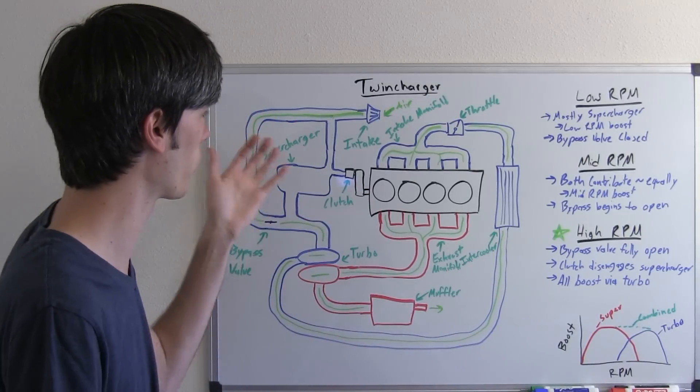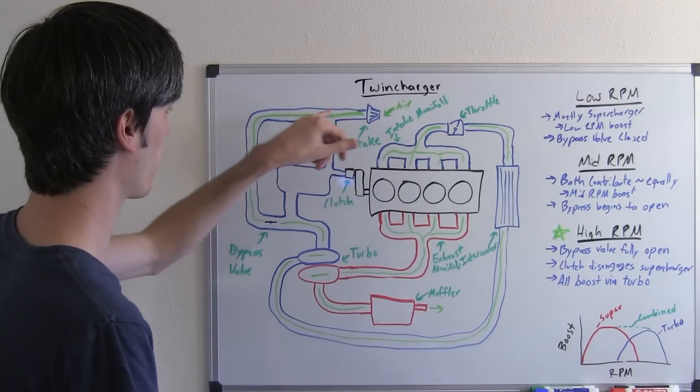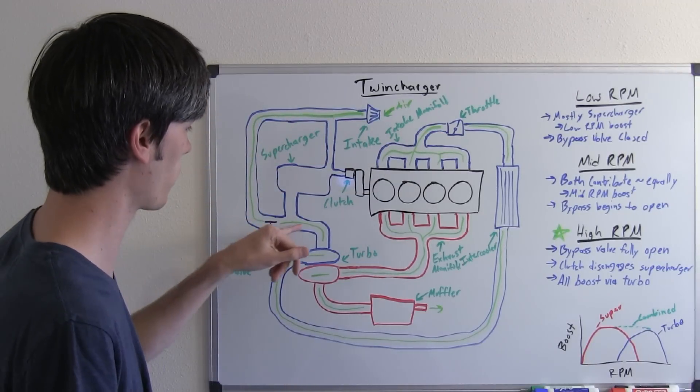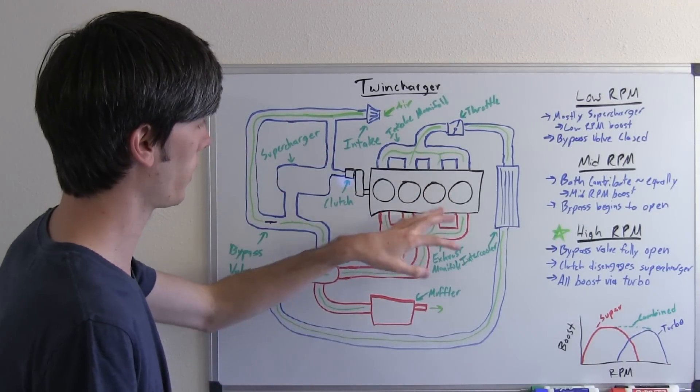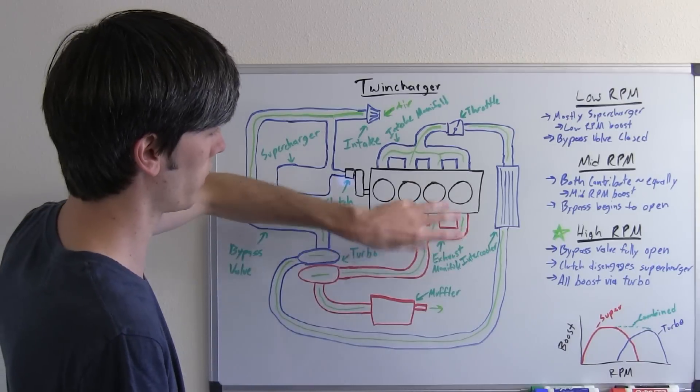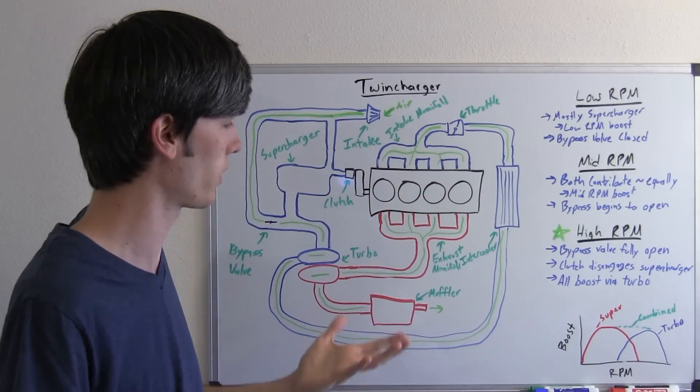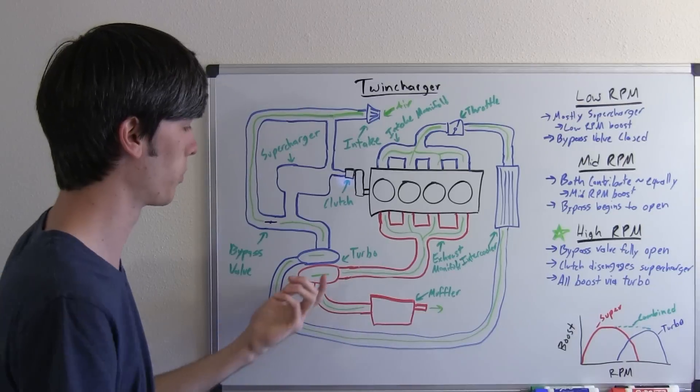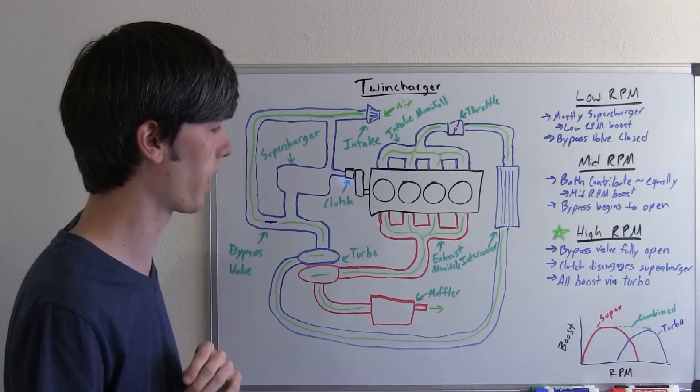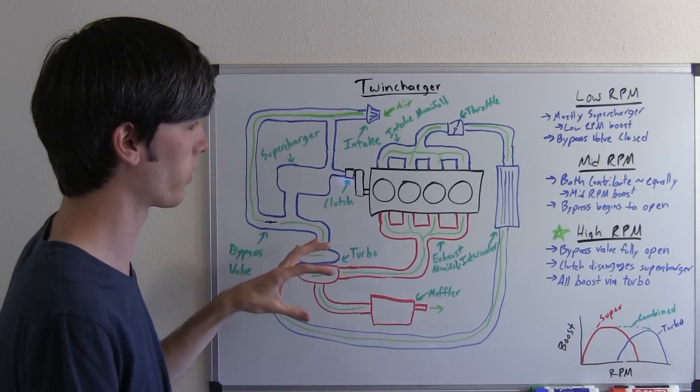So you're going to come in, bypass that supercharger, go directly to the turbo, go inside and then burn. You're going to come out your exhaust, and you're going to have a lot of exhaust gas because you're at these high RPMs, so it's going to be enough to spool up this turbo all the way and provide maximum boost. So all of the boost is going to come directly from the turbocharger at the higher RPMs.